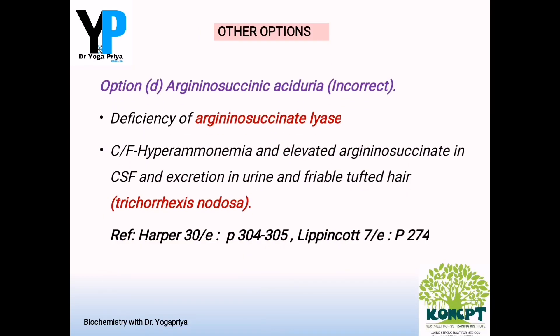The final option is Option D, argininosuccinic aciduria, which is a urea cycle disorder mainly due to deficiency of the enzyme argininosuccinate lyase. Due to this enzyme deficiency, all previous substrates accumulate and ammonia levels are elevated in the CSF and blood, resulting in hyperammonemia with elevated argininosuccinate levels in CSF that get excreted in urine. The pathognomonic feature of argininosuccinic aciduria is friable tufted hair, called trichorhexis nodosa.